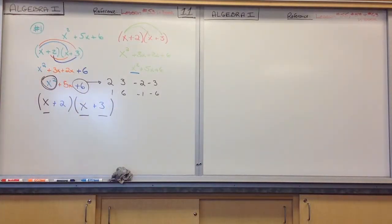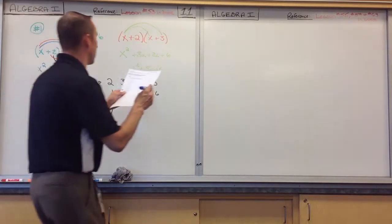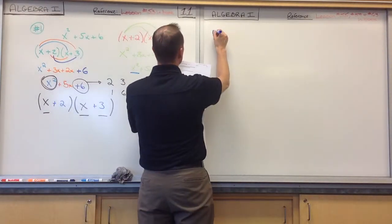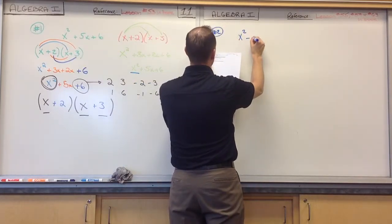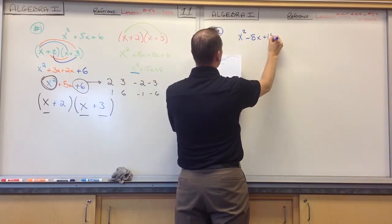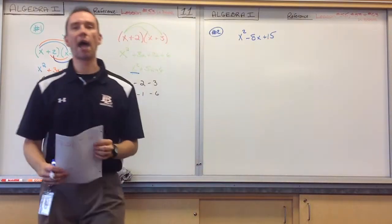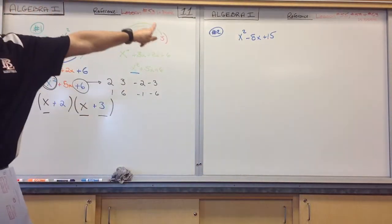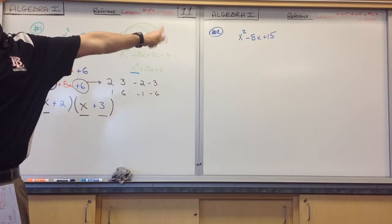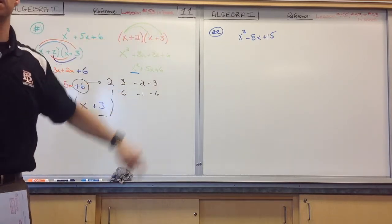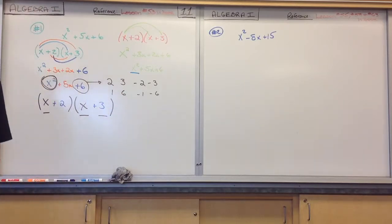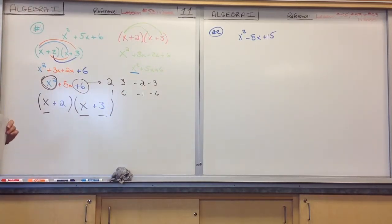Alright, let's take a look at another one. We're going to take some time to really examine a whole bunch of these. Number 2: we have x squared minus 8x plus 15. Please write it down. I want to know what quantities, when multiplied together, give me that polynomial. That's what it means to be a factor — two or more quantities, when multiplied together, give you what you're starting with.